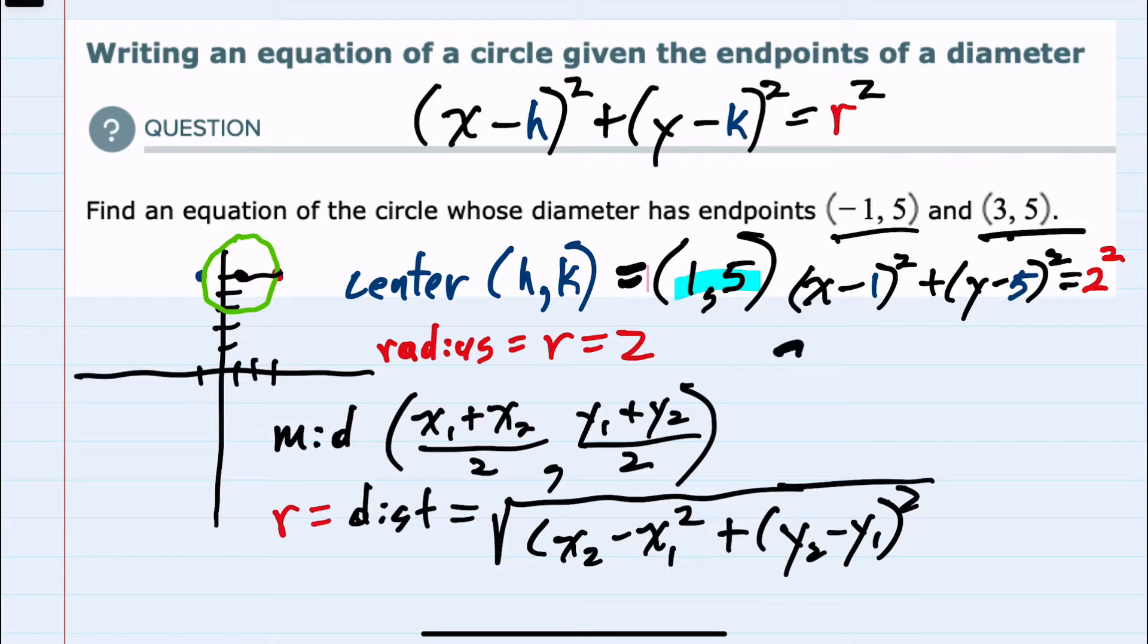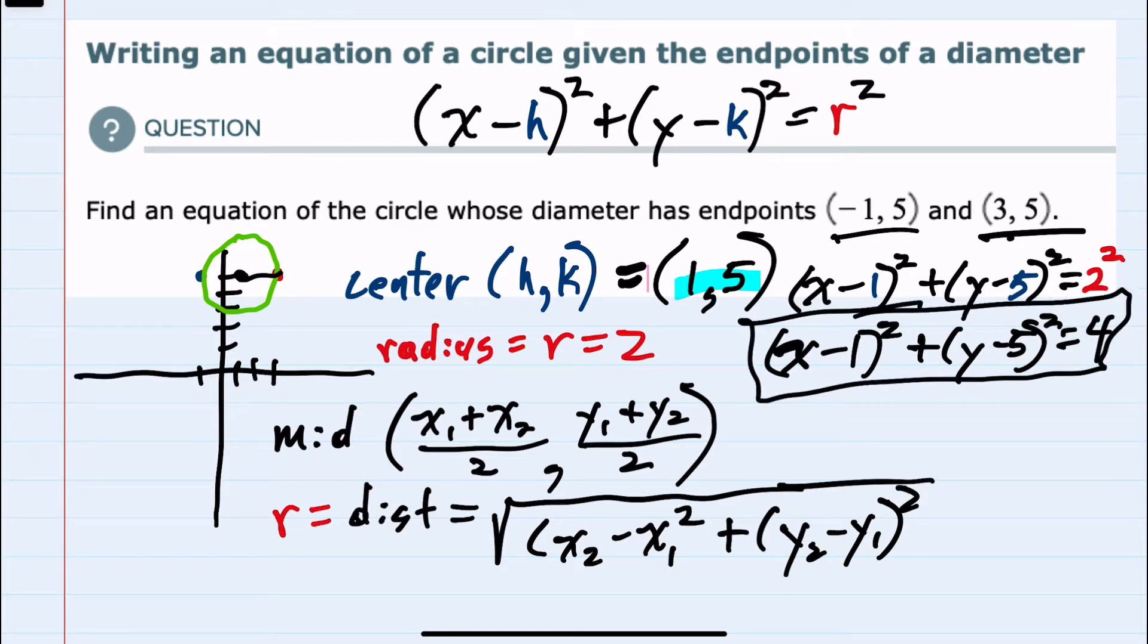And then simplifying the right-hand side, the formula is (x - 1)² + (y - 5)² = 4.